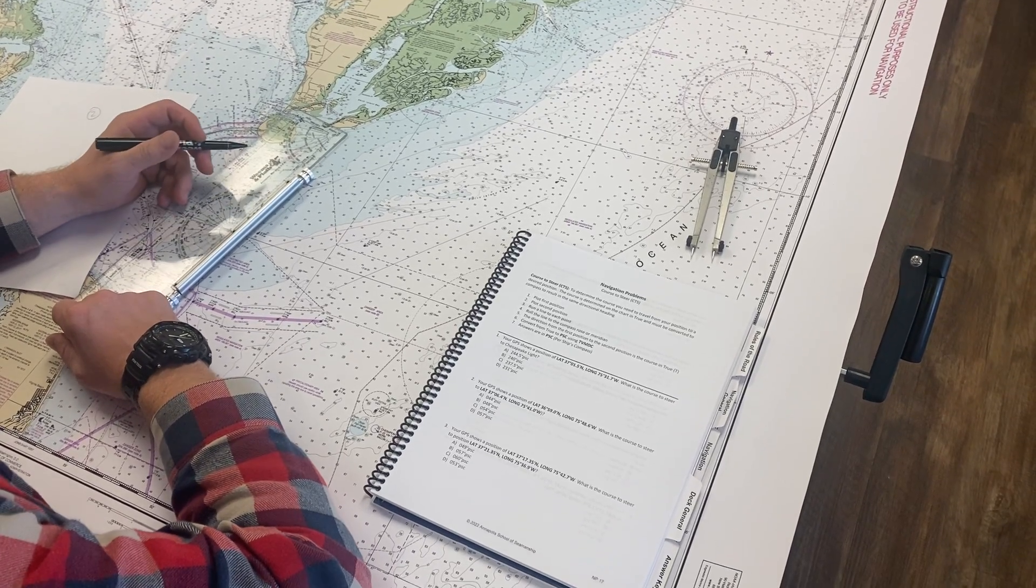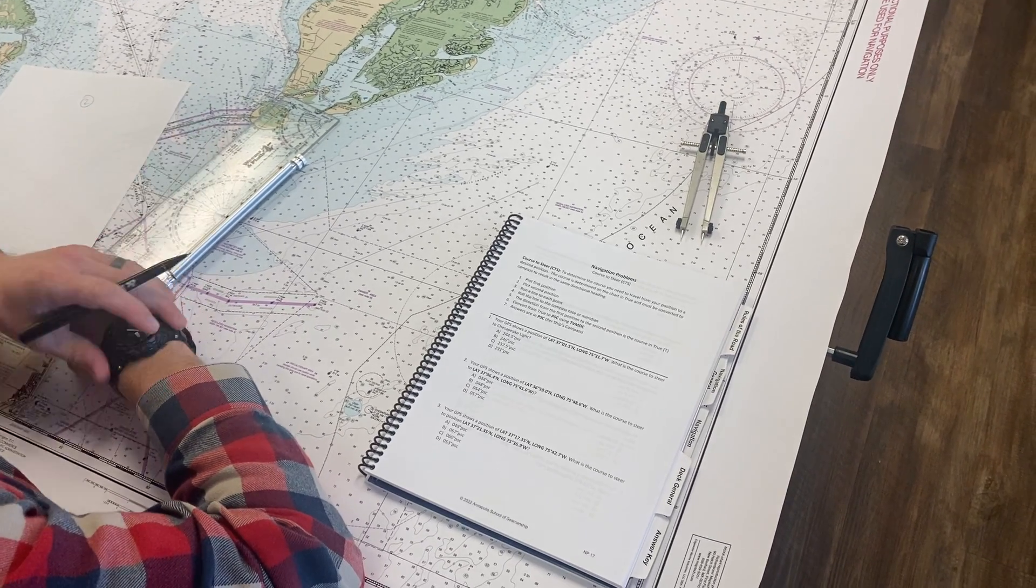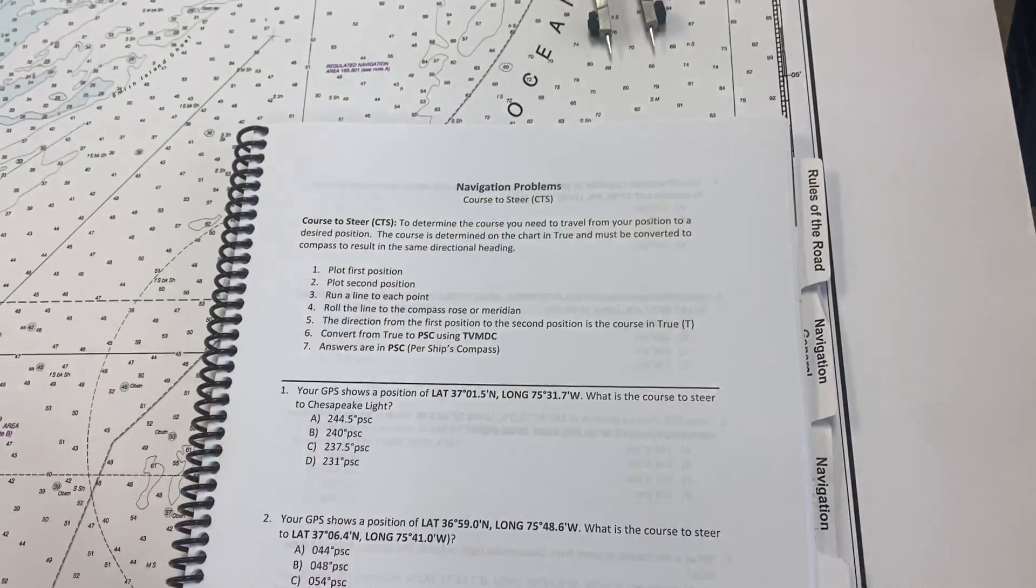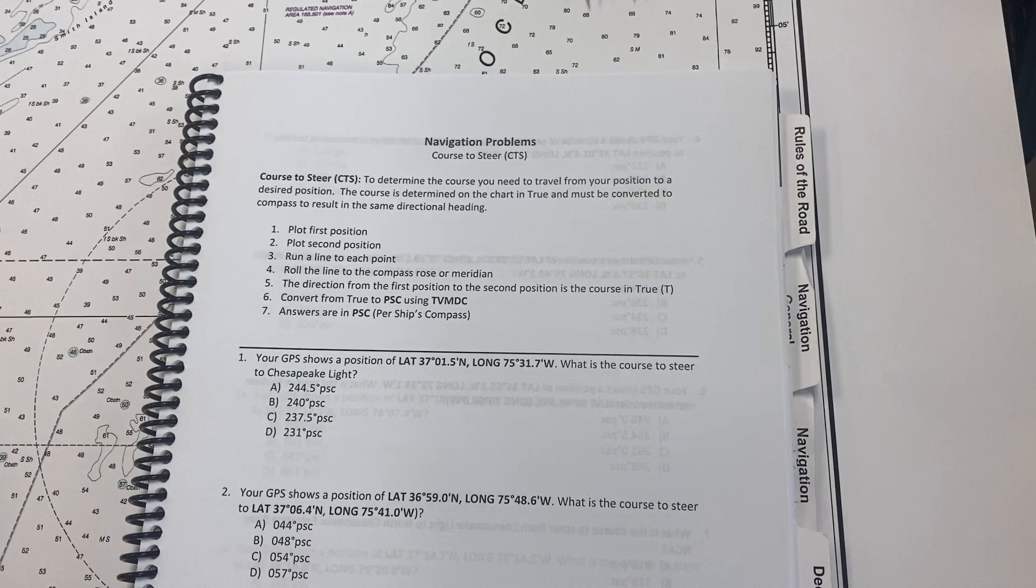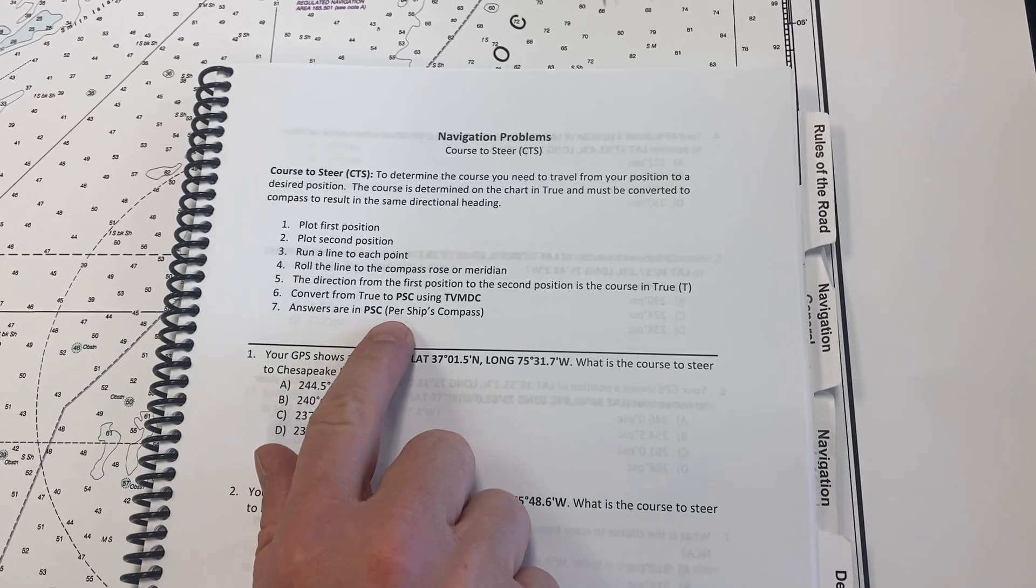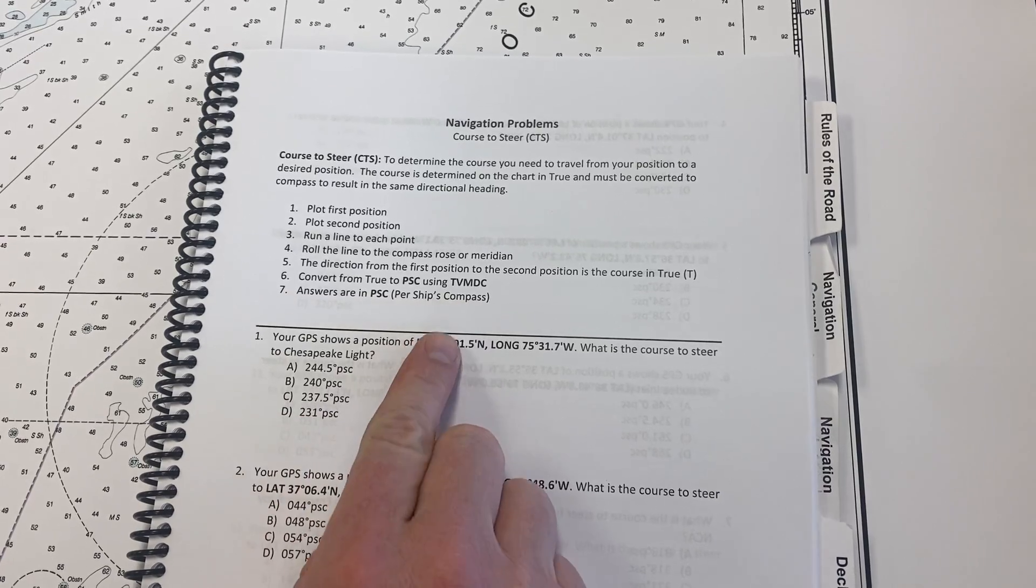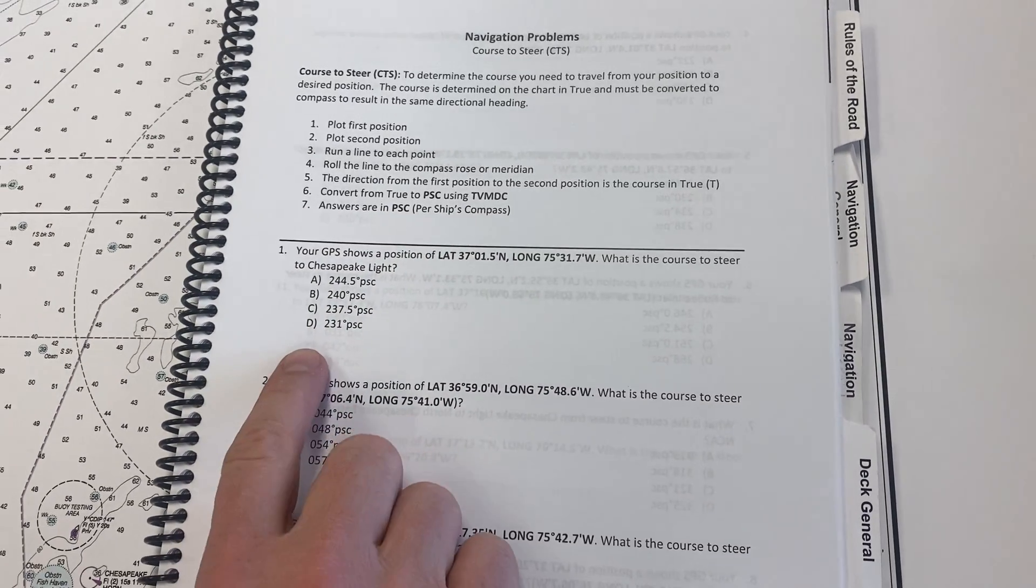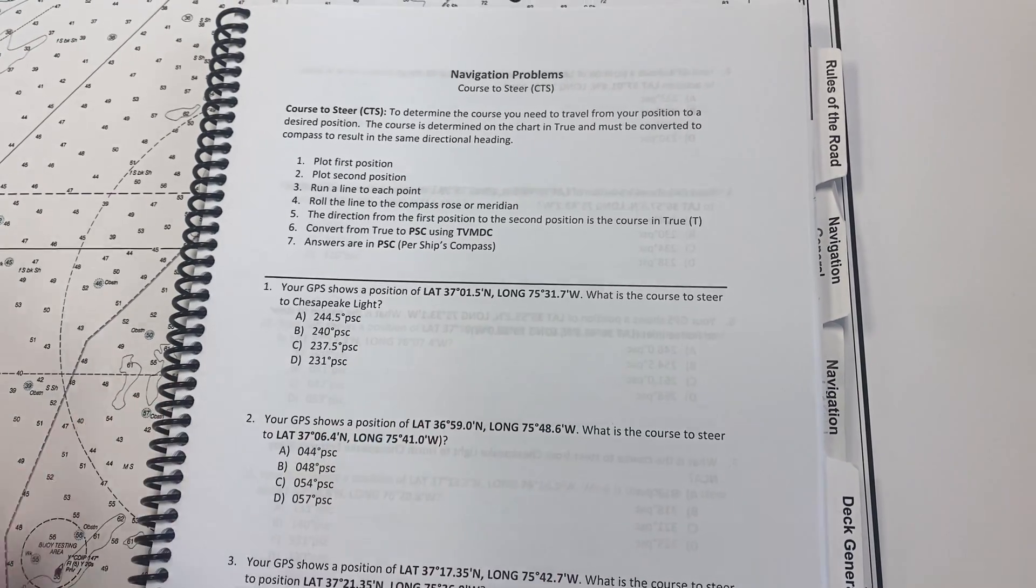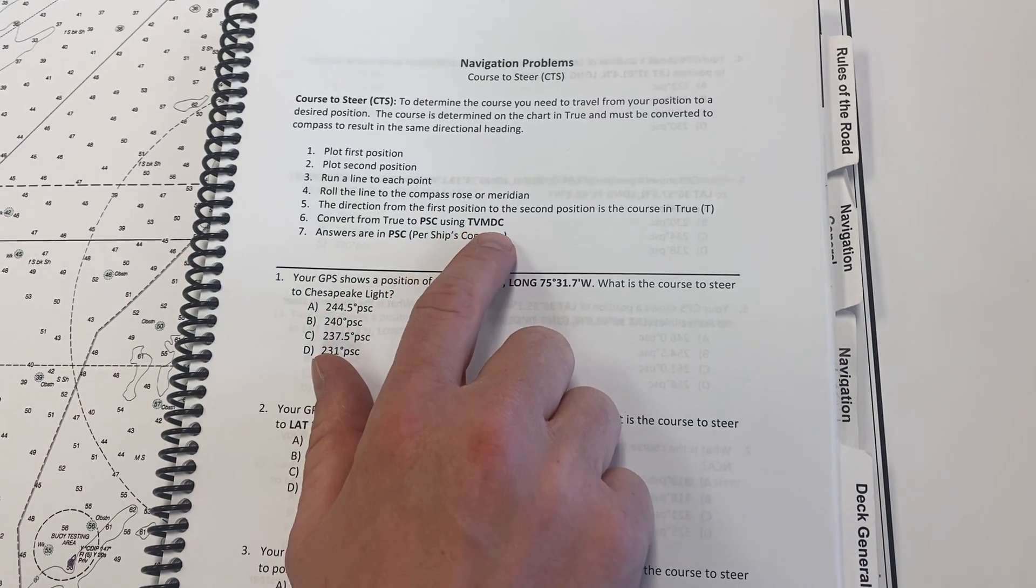Okay, so here we are again in our navigation problem section of the workbook and we are working a course to steer problem. We're trying to figure out what the course to steer from one point to another per the ship's compass. That is why you see after these answers it says PSC, that's per ship's compass. So at the end of solving this we need to make sure that we TVMDC this problem.